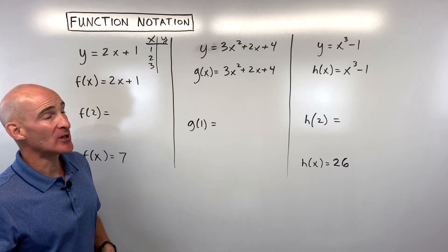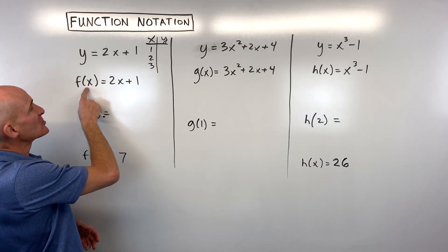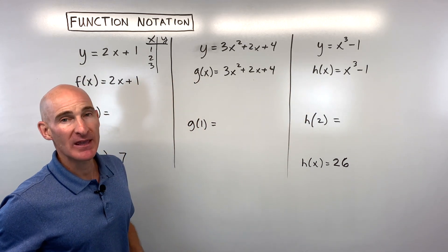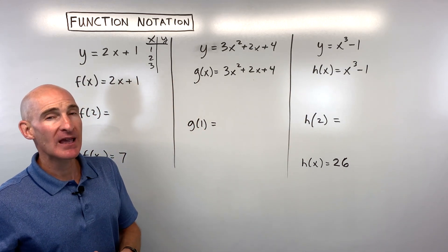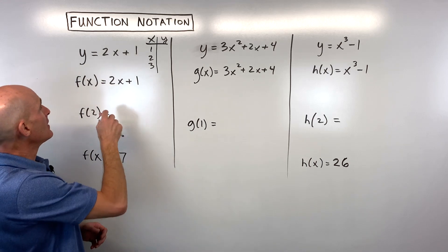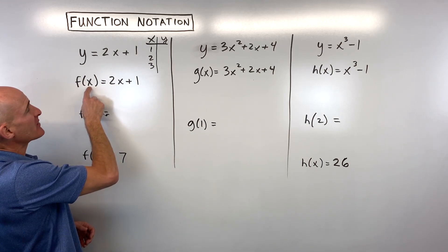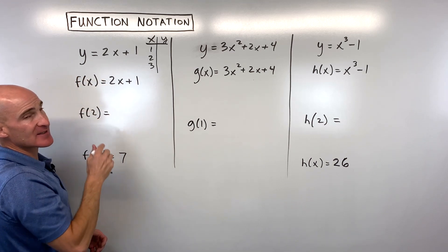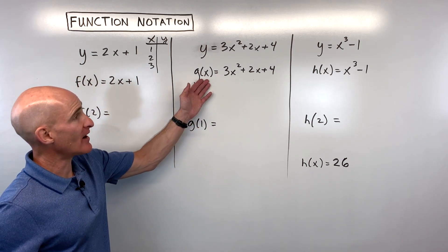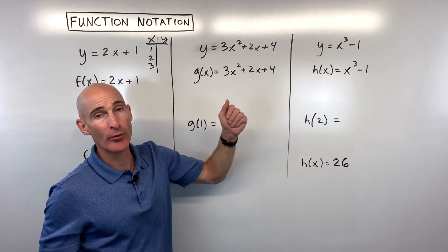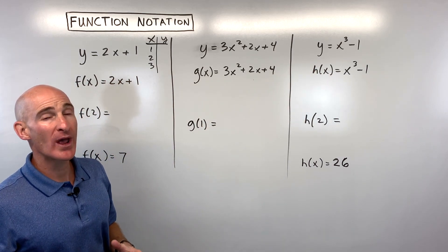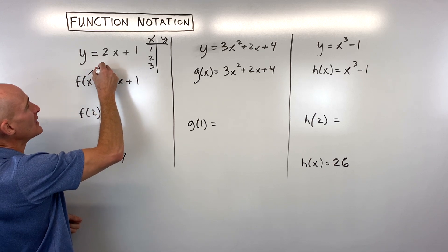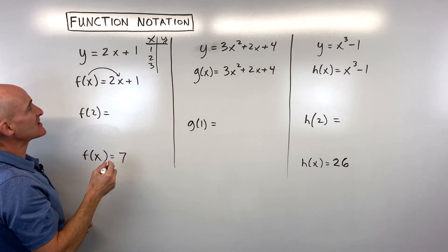When it comes to function notation, you'll see f of x, or g of x, or h of x. What does that mean? It's a different way of writing that whatever's in the parentheses is our input, and what comes out — f of x, g of x, or h of x — that's our output. Whatever's in the parentheses is going to go in for x on the right side.